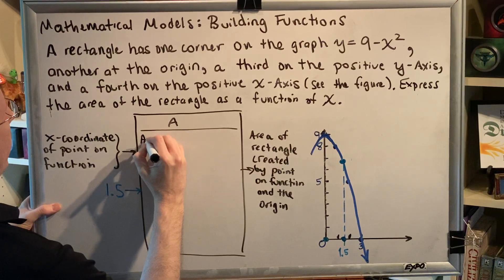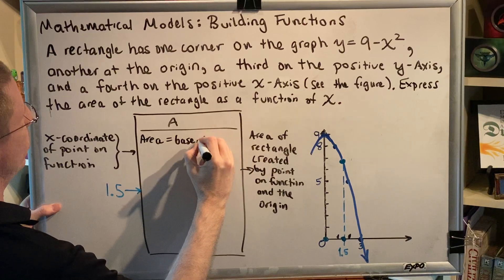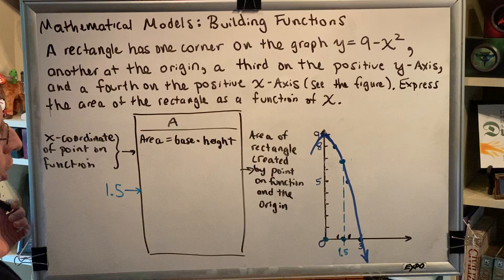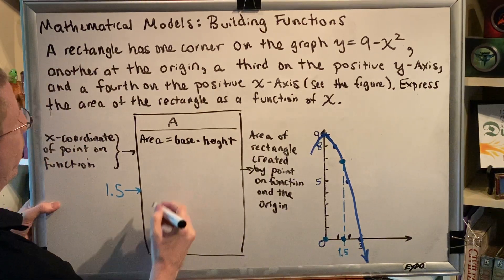The area of our rectangle equals base times height, or length times width—they're the same formula. We've learned that in this instance, if x is 1.5, then the base is 1.5.